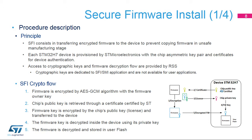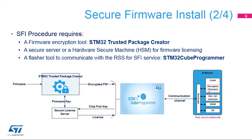The SFI cryptographic flow works as follows. First, the firmware is encrypted with Advanced Encryption Standard in Galois Counter Mode, or AES-GCM. Then, a firmware license for the device is generated from the firmware encryption key and the device's public key — this license can only be used by the targeted device. Finally, the encrypted firmware is transferred to the device and decrypted before being stored in the user flash memory.